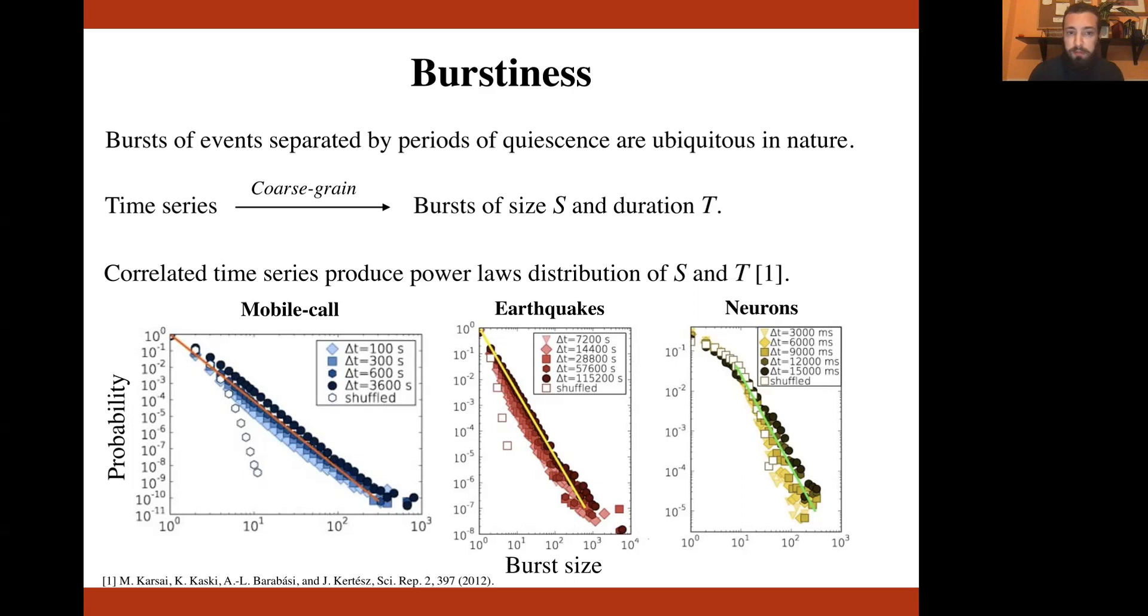The data typically come in the form of time series, where an individual time in the time series represents the time at which a certain event, for example, an earthquake, has happened.